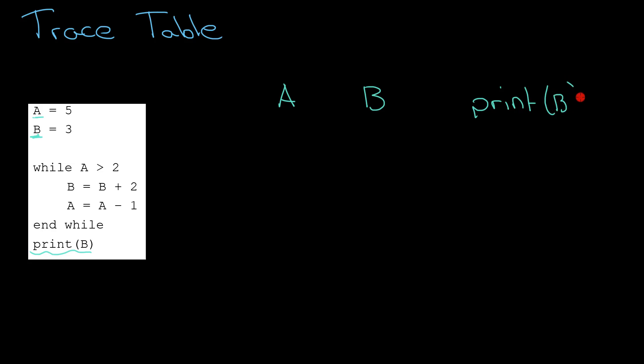And you'll see now I start to make a table just like this. There's my columns and there's my headers and I'm ready to go. I've got A equals 5 and B equals 3. What I would suggest: just set your variables up before the loop as you'd expect them. So A equals 5, B equals 3, that's fine. I haven't printed anything yet so this is blank.